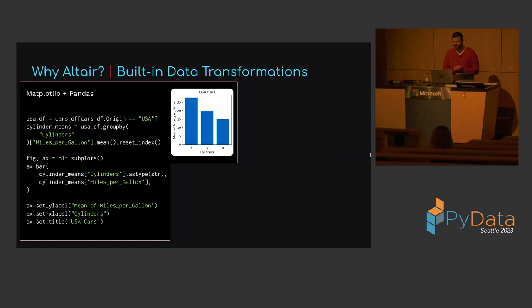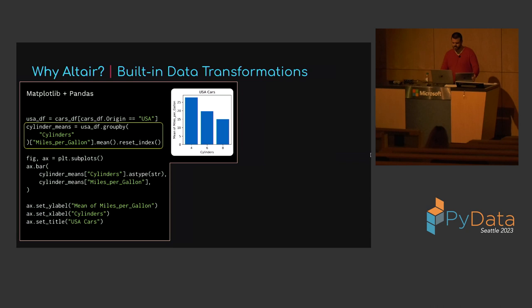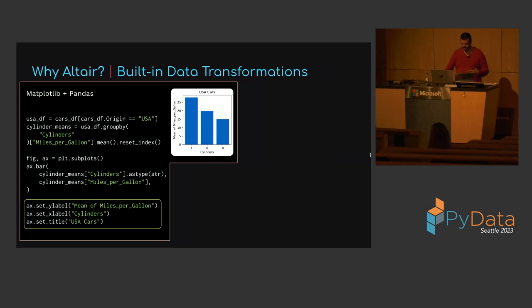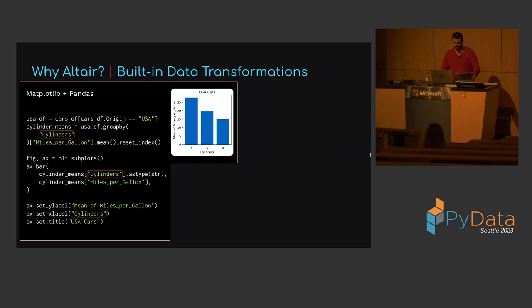Next, Altair has built-in support for data transformations. We're going to create a bar chart of the average miles per gallon for each cylinder count for only USA origin cars. In matplotlib, we first use pandas to filter the dataframe to only those rows with origin USA, then group by cylinders and compute the mean, reset the index to create a cylinder_means dataframe. The same column needs to be specified in multiple places — if you want to change the x-axis column you'd need to modify the code in three places.